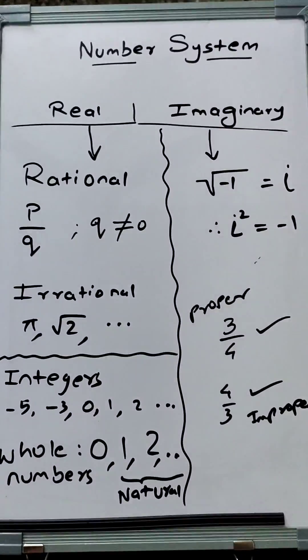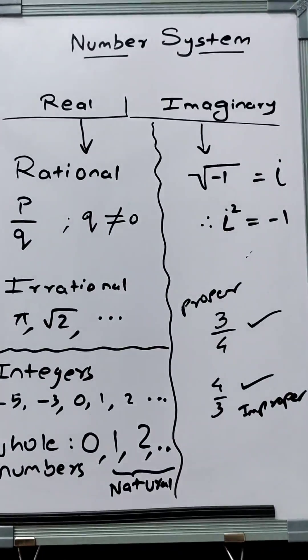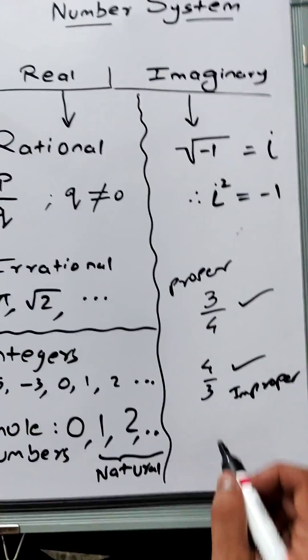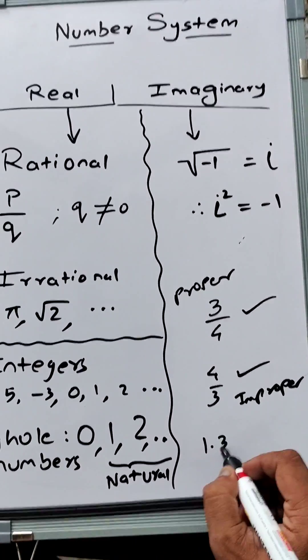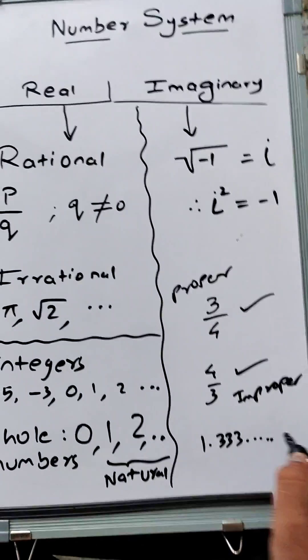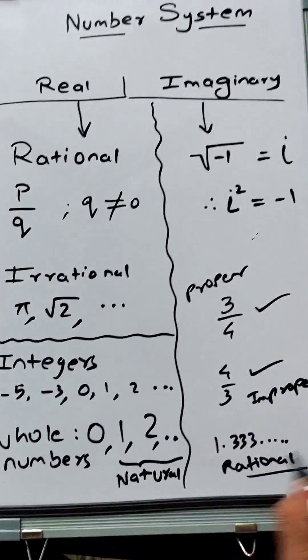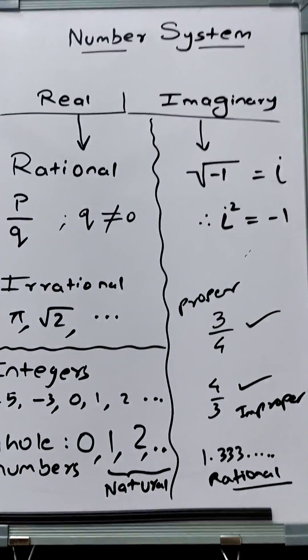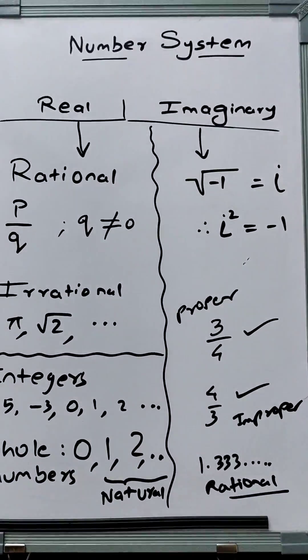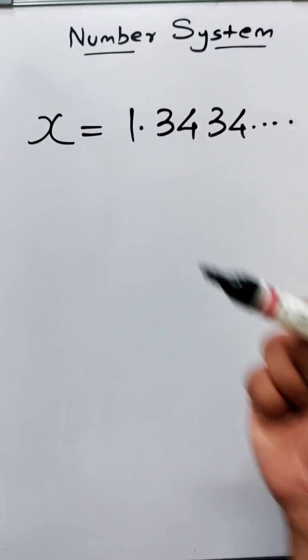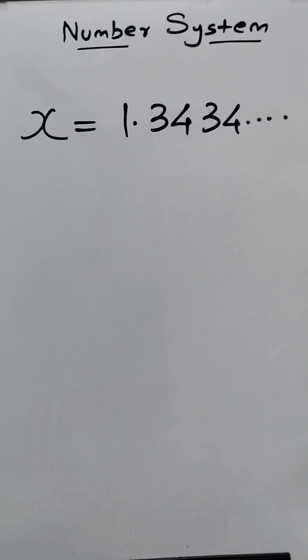For example, x = 1.3434... This is a rational number, not irrational, because irrational numbers are non-repeating and never-ending. As you can see, the value of x is 1.3434... it repeats. 34 repeats.